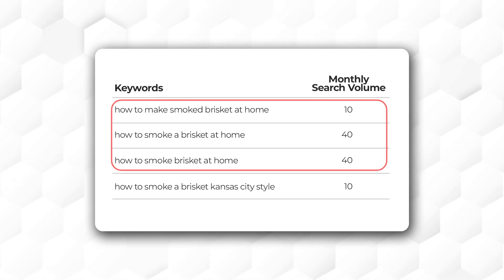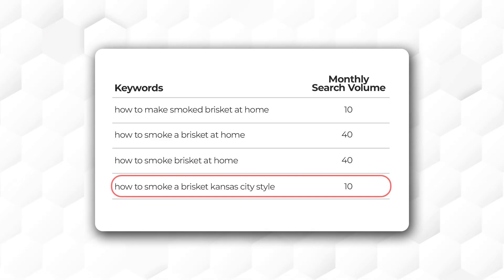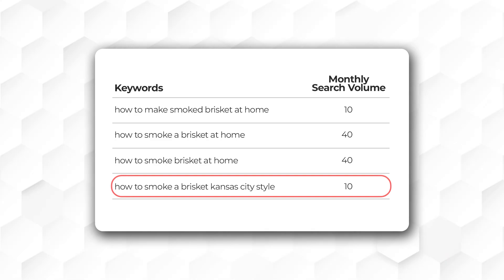The first three are. Do these keywords serve the same purpose when people are searching for them? People searching for these three keywords are looking for the same information about smoking brisket at home. They have the same search intent. But the last keyword is a little more specific and answers another search intent.